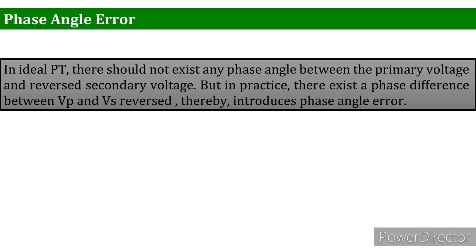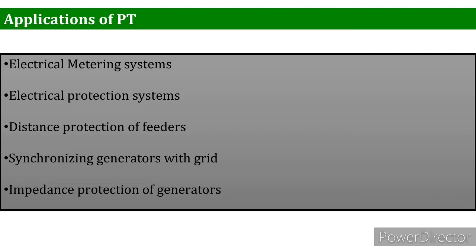To reduce these errors and improve accuracy, the transformer should be designed so that its windings have appropriate magnitudes of internal resistance and reactances. In addition, the core should require minimum magnetizing and core loss components of the exciting current. Some applications of instrument transformers include electrical metering systems, electrical protection systems, distance protection of feeders and transmission lines, synchronization of generators with the grid, and impedance protection of generators. That concludes the instrument transformer section Part 2 on potential transformers.